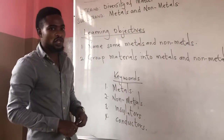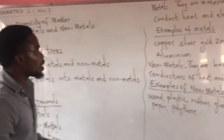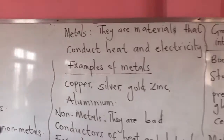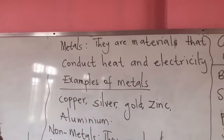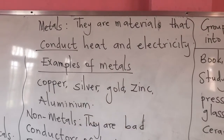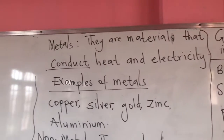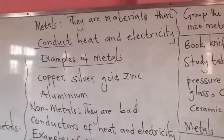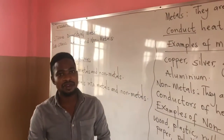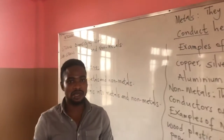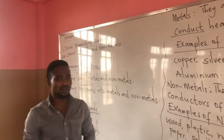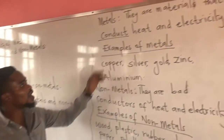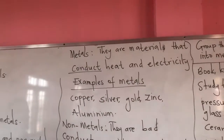Now we want to know what a metal is. Metals are materials that conduct heat and electricity. All the materials I have mentioned fall under metals and non-metals. We are going to do some few exercises here which will help us understand the whole concept.